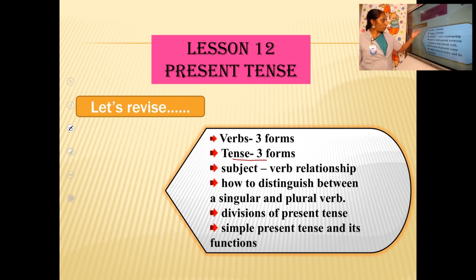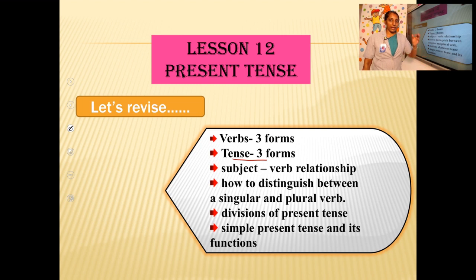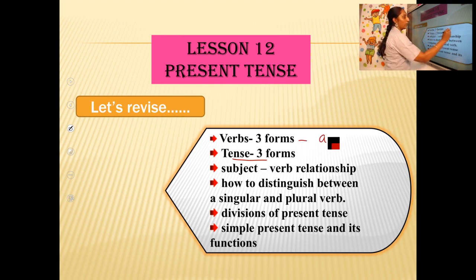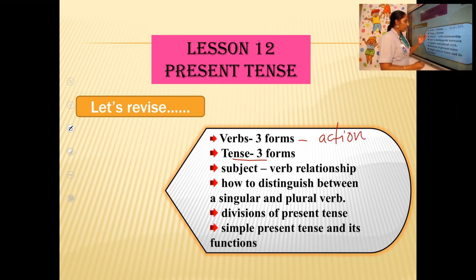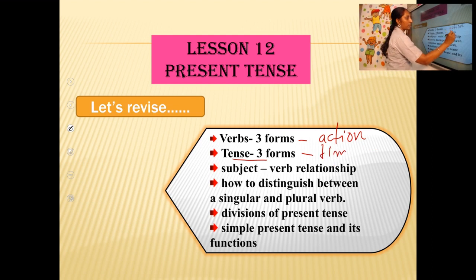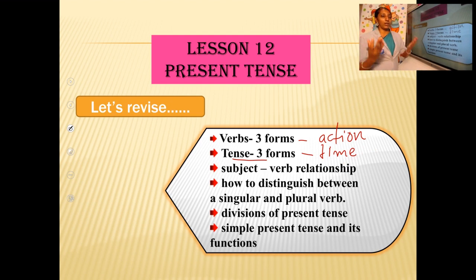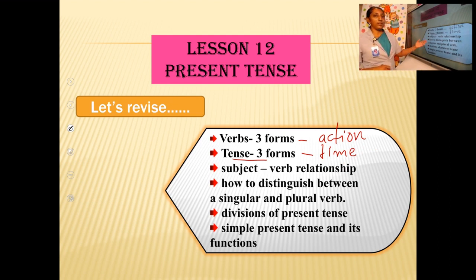Don't get confused with verbs and tense. Tense has got three forms: present tense, past tense and future tense. Verbs are related with action, and tense is related with time — it indicates the time when a particular action happened.